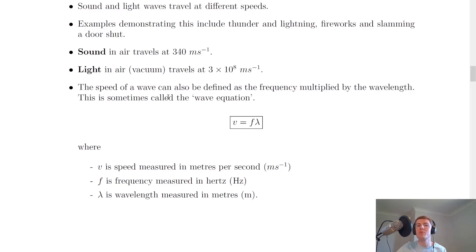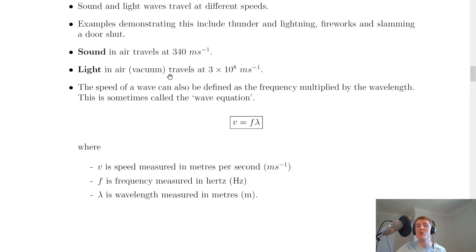To recap the speeds of sound and light in air: sound travels at 340 m/s, while light in air — or in a vacuum with no particles — travels at a maximum of 3×10⁸ m/s. An example of a vacuum is space, where there are no air particles to transfer sound, so light travels at 3×10⁸ m/s with nothing to interfere with it.